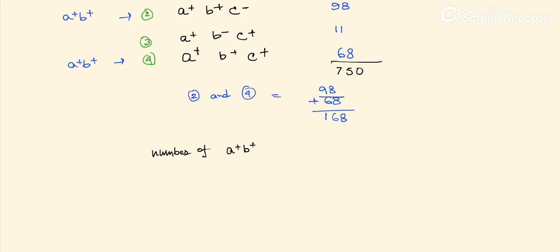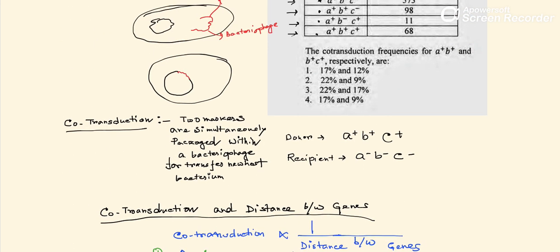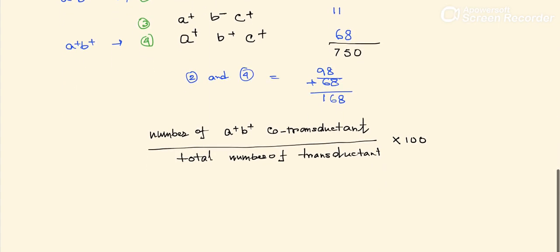The formula is: co-transduction frequency = (number of a+ b+ co-transductants) divided by (total number of transductants) multiplied by 100. So we calculate: 166 divided by 750, multiplied by 100.